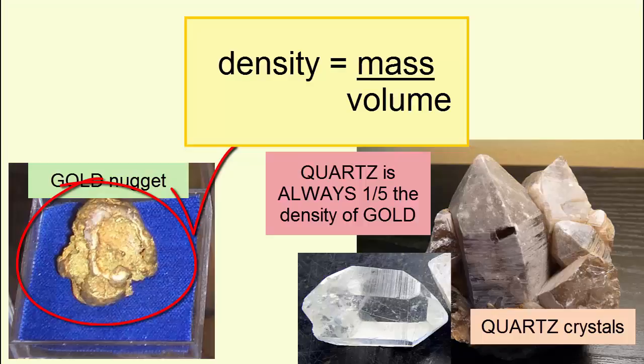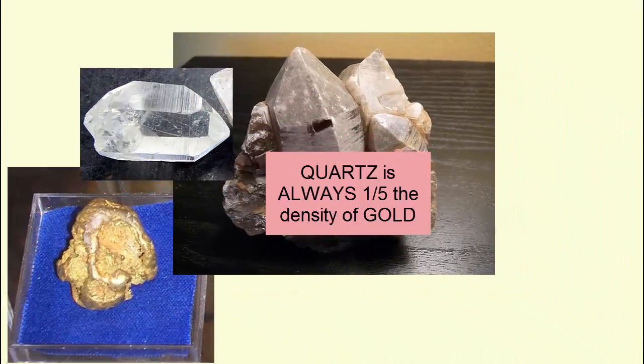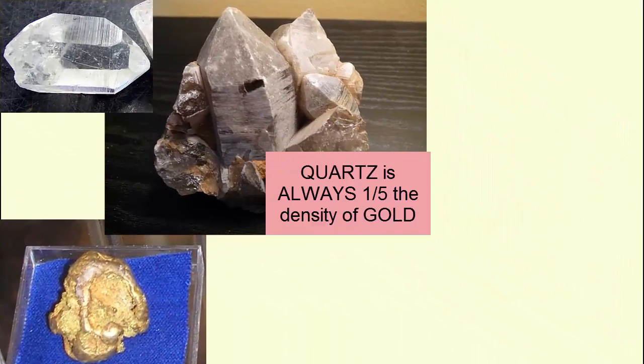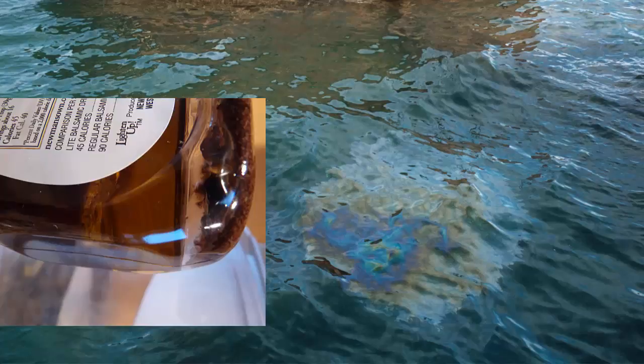Quartz is always one-fifth the density of gold, and if both were molten and floating in a bucket together, the quartz would rise to the top and the gold sink to the bottom. We see this really clearly when we mix oil and water. The denser water sinks under the less dense oil.